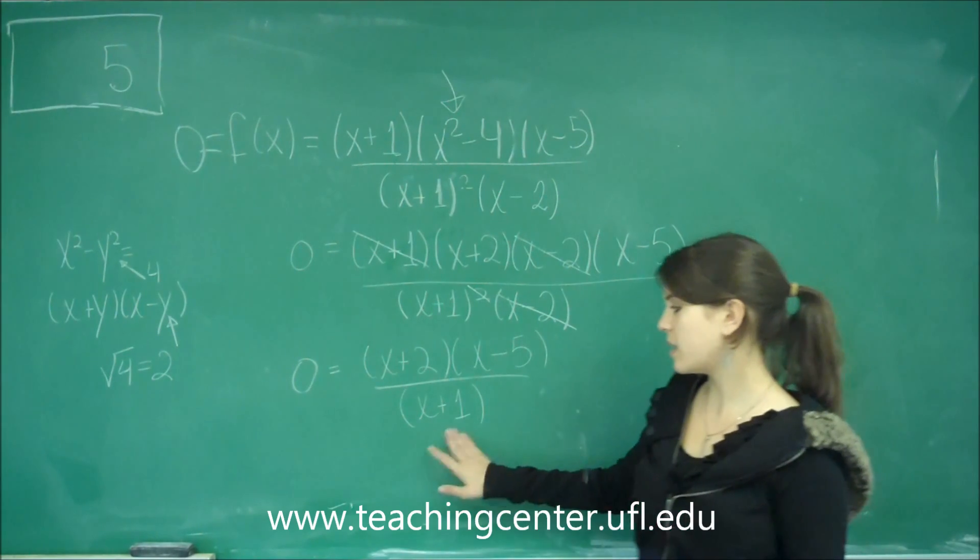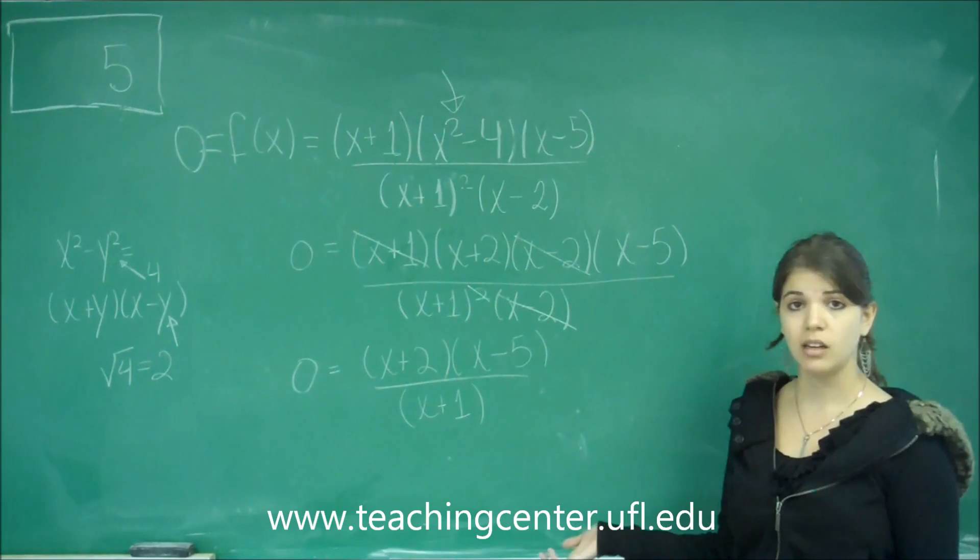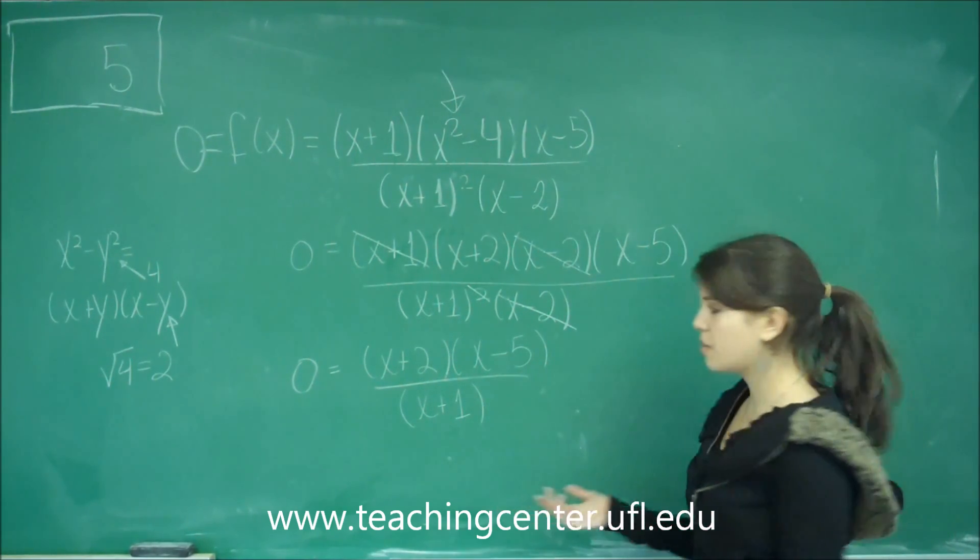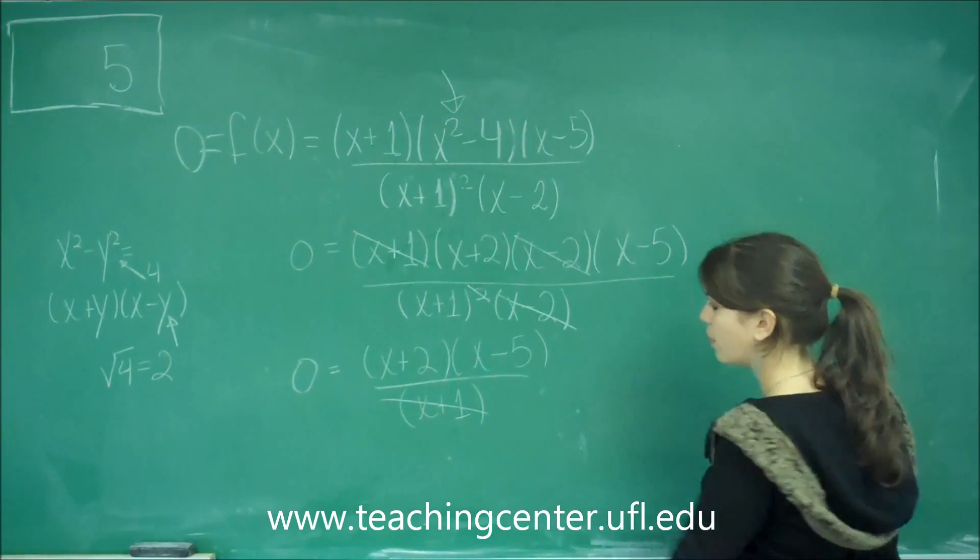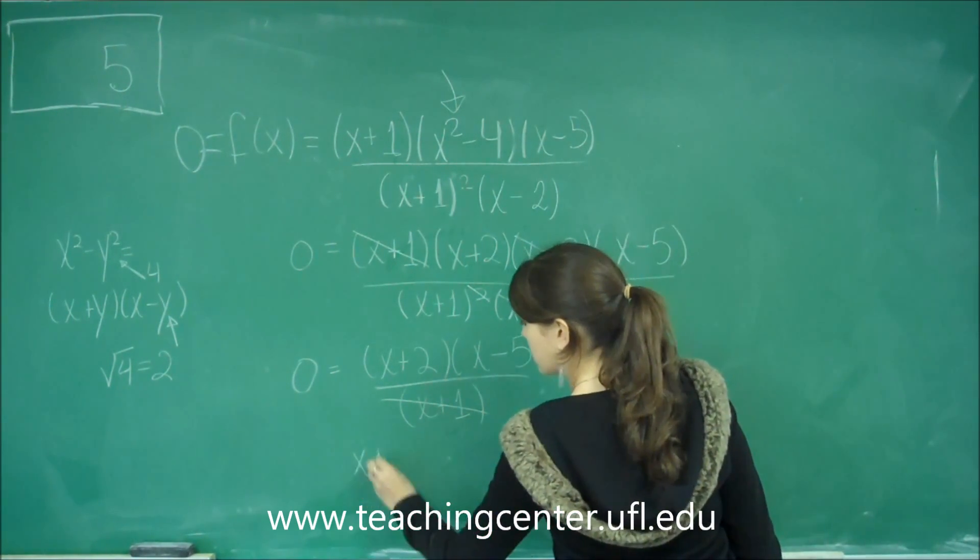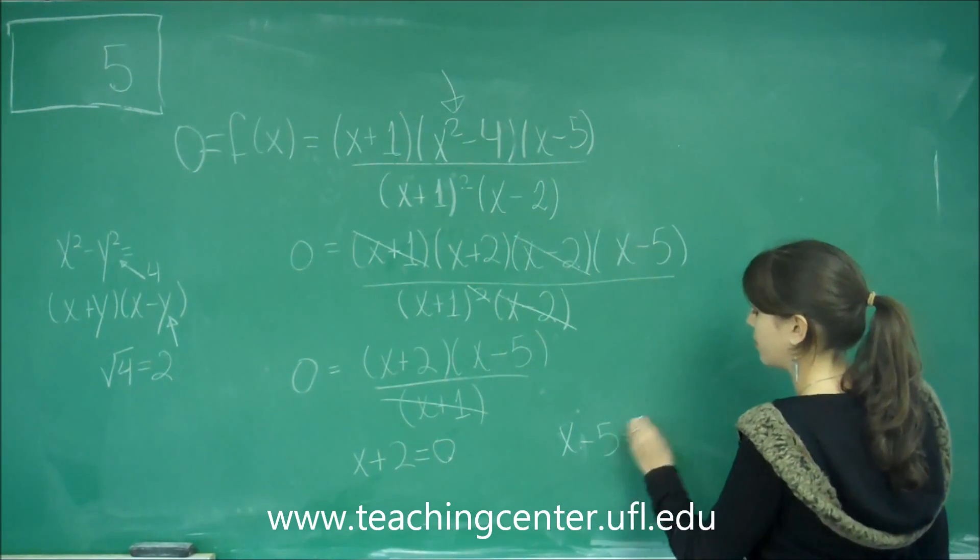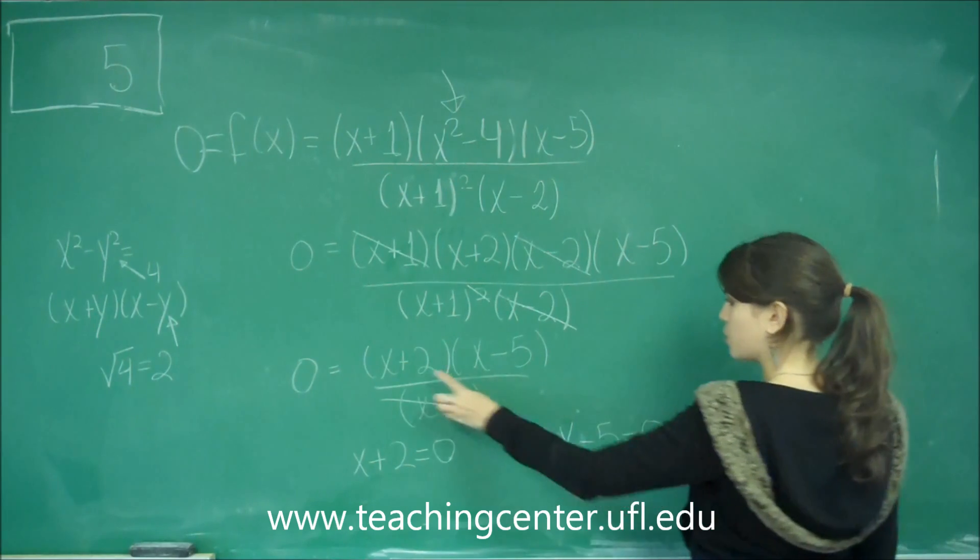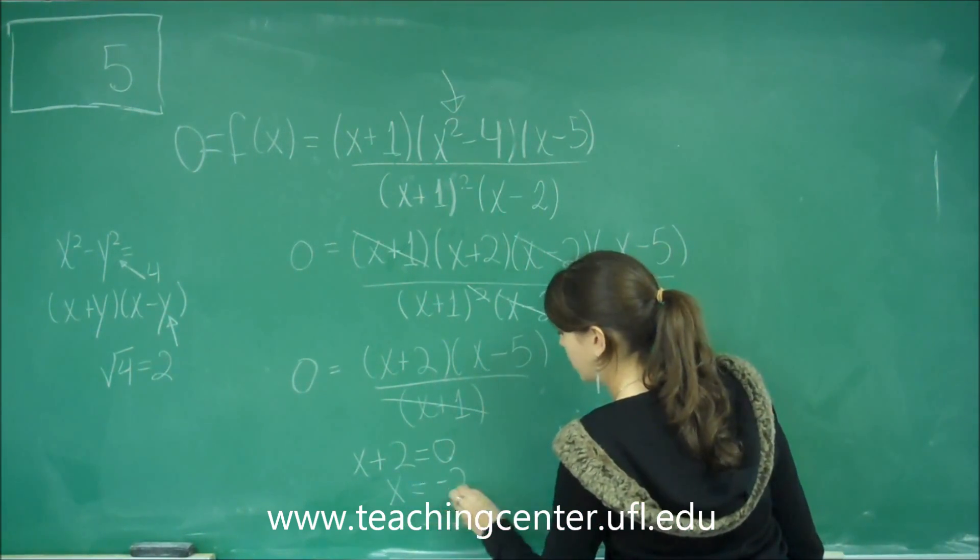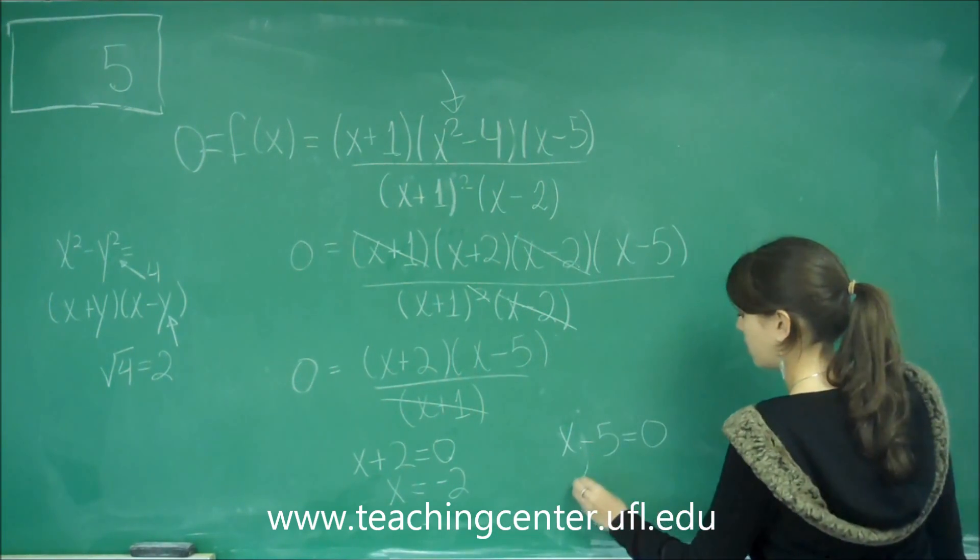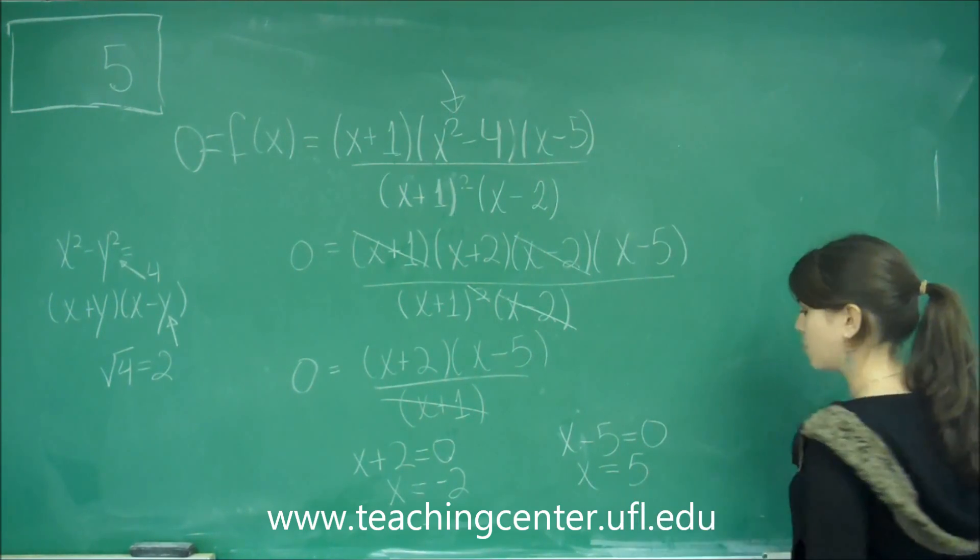This x plus 1 isn't going to come into play for this question, because we're just finding the x intercepts, and when we multiply this over there, it's going to go to 0. Now, we set x plus 2 equal to 0, and x minus 5 equal to 0, each one of these equal to 0. Subtracting 2 from each side, we get x equals negative 2, and on this side, we add 5 to get x equals 5.